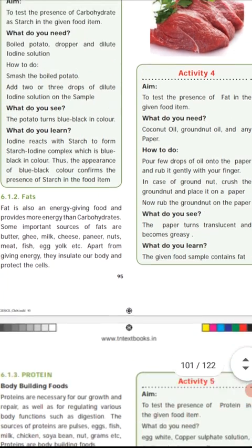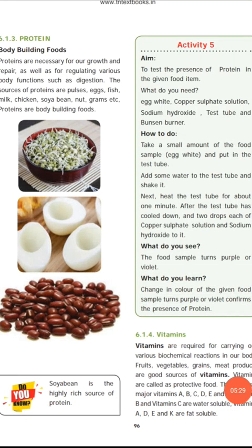Next one is protein. Proteins are body-building foods. Compared to carbohydrate, fats give more energy, but protein is necessary for our growth and to repair cells. Protein also regulates body functions and digestion. Some sources of proteins are pulses, eggs, fish, milk, chicken, soya beans, nuts, and gram. Sprouted pulses, boiled egg white, and soya beans are all rich sources of protein. Soya beans are the highest, highly rich source of protein.